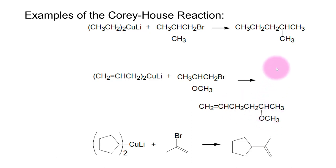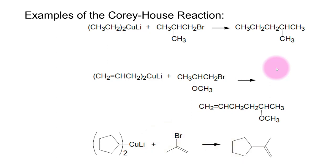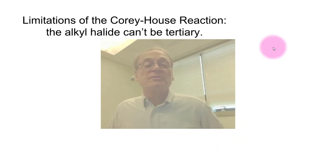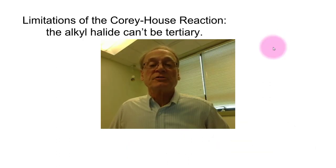This last example illustrates that the alkyl halide doesn't have to have the bromine or chlorine or iodine on a saturated carbon — it can be on an alkene carbon, and that works just fine. So the cyclopentyl group links with the propenyl group to make this particular molecule.